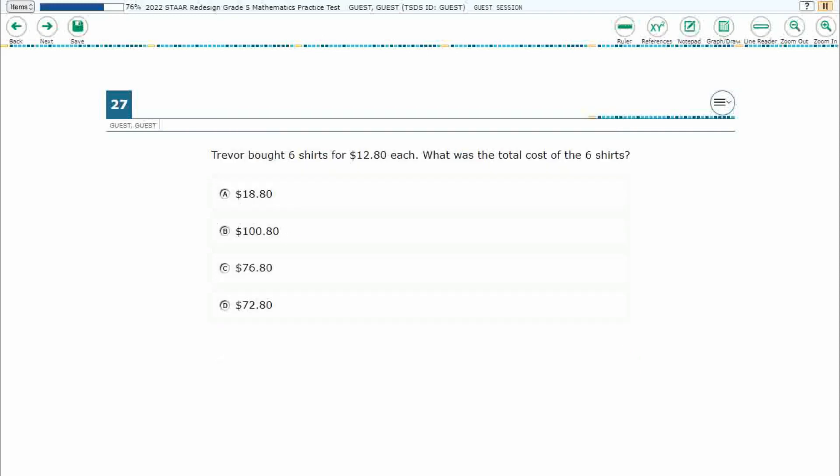If you haven't done so already, please go ahead and take a moment to pause the video, work this problem out on your own, unpause it, and we will look at our answers together. So Trevor is buying six shirts for $12.80 each. What is the total cost of these six shirts? Seems pretty straightforward.